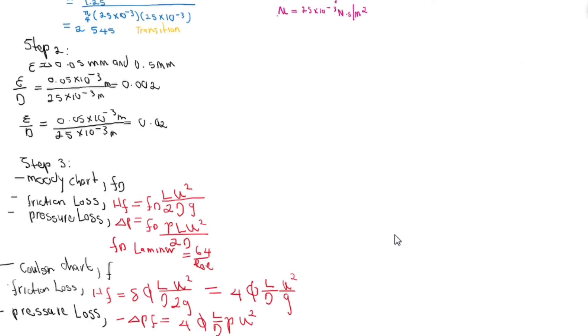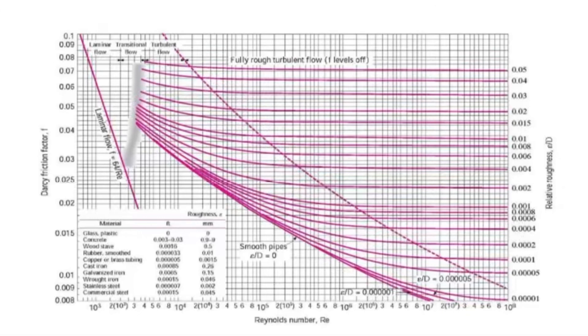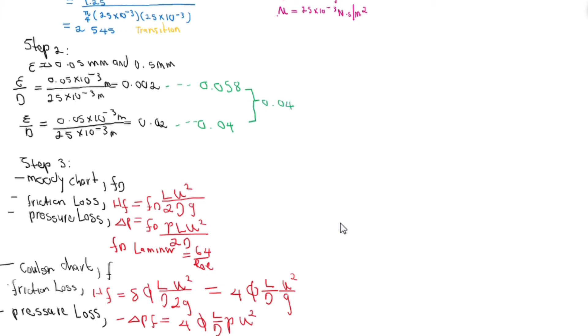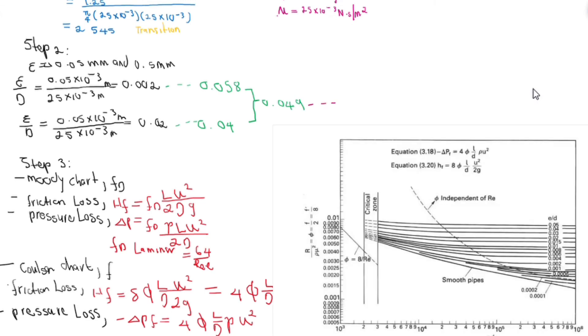I am going to read off my friction factor from the Moody chart between the ranges. If you go to your Moody chart and extract, you should get 0.058 and 0.04. The average between these two is 0.049. If you go to Carlson chart, it also tells us that this factor can be expressed as friction obtained from the Moody chart over 8, which is simply 0.049 divided by 8, and this should give you 0.006.